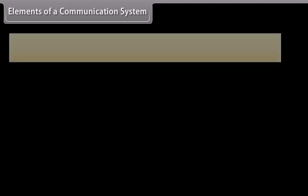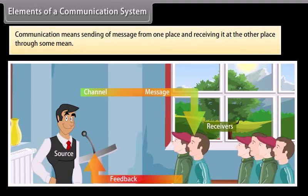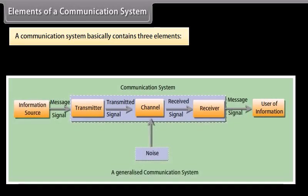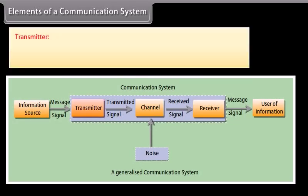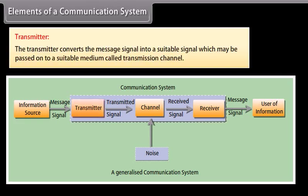Elements of a communication system: Communication means sending of a message from one place and receiving it at the other place through some medium. A communication system basically contains three elements: Transmitter. The transmitter converts the message signal into a suitable signal.